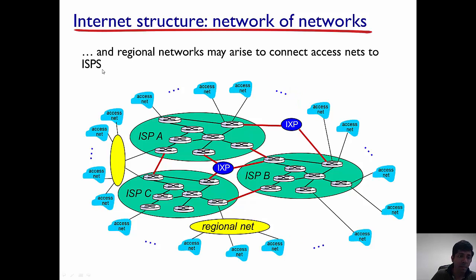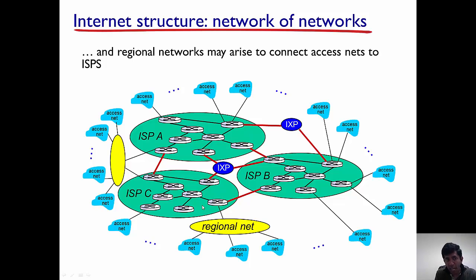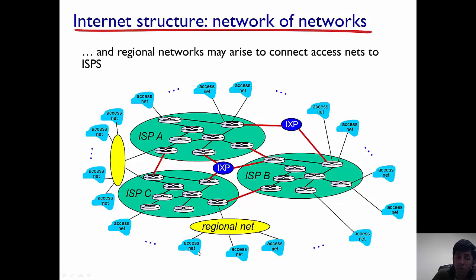Some access ISPs may be located in remote areas and may not be able to directly connect to the global ISPs. This gives rise to a monetary incentive for developing a regional ISP, which connects to a bunch of these local access ISPs. The regional ISP is then connected to the global ISP, so the regional ISP acts as an intermediary between the access ISP and the global ISP.